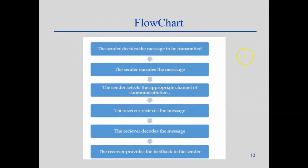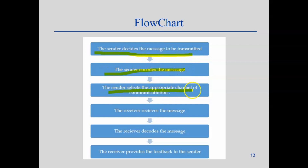This is a flowchart. The sender decides what message is to be transmitted, selects a channel through which it can be communicated, the receiver then receives and decodes the message, and finally the sender receives feedback.